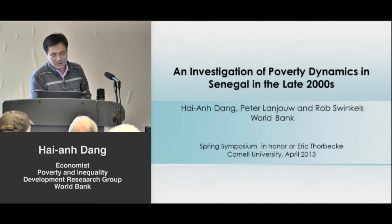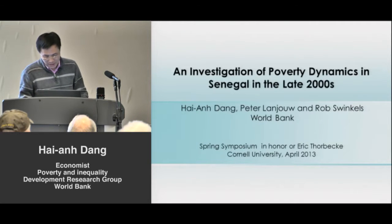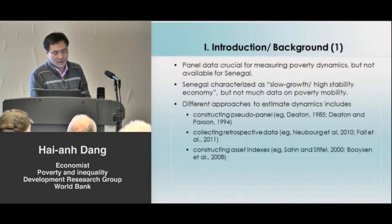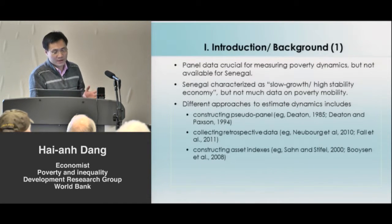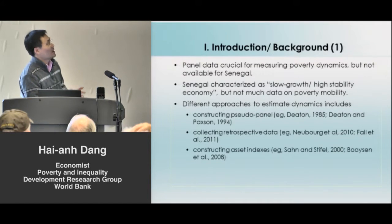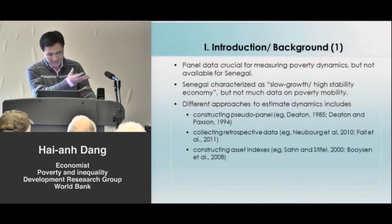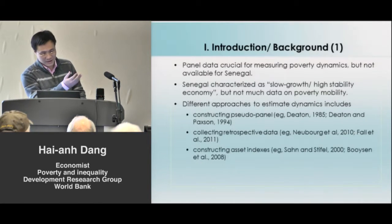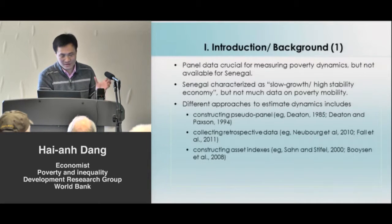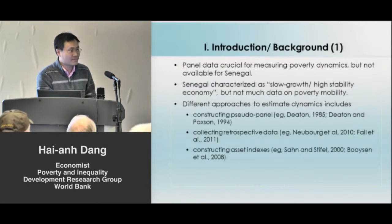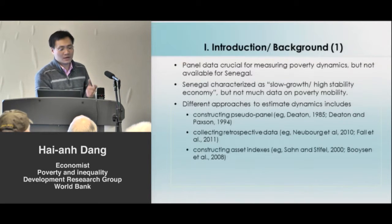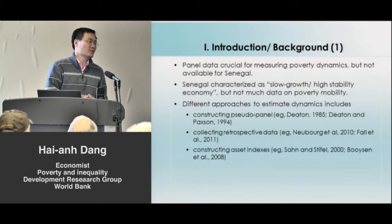For this work, we look at poverty dynamics in Senegal in the late 2000s. This is an application of a new technique we are working on to construct synthetic panel data from cross-sectional data. As my previous presentation shows, we need panel data — true panel data — to look at poverty dynamics over time. So the question is, what should we do in the absence of true panel data?